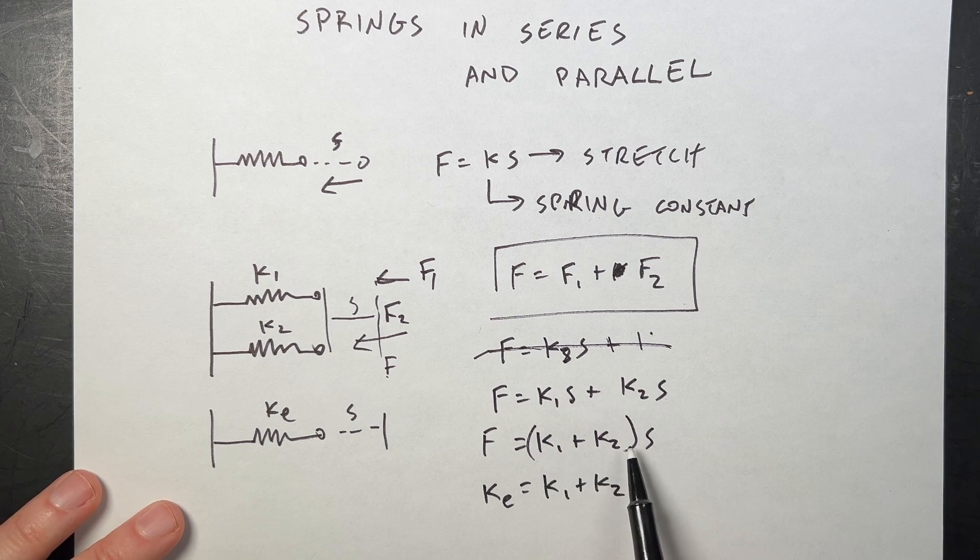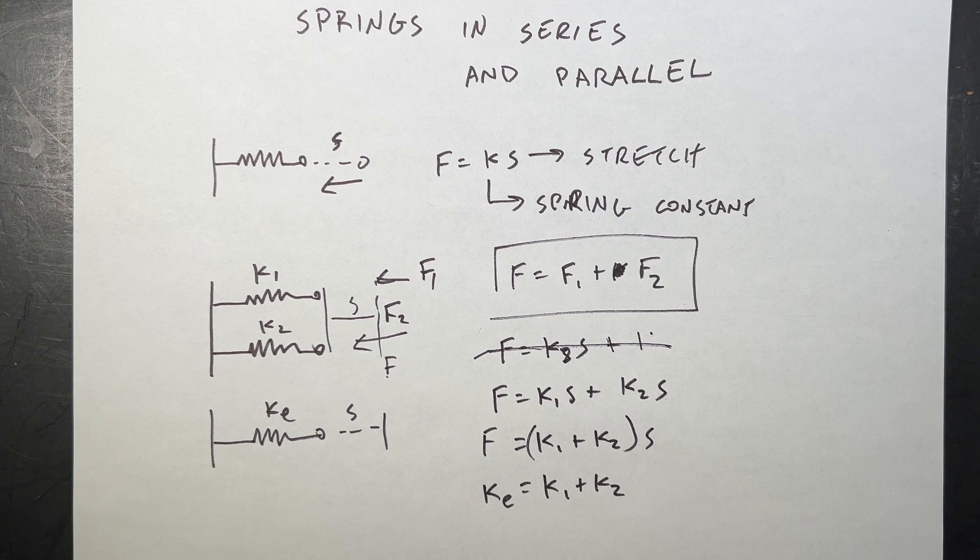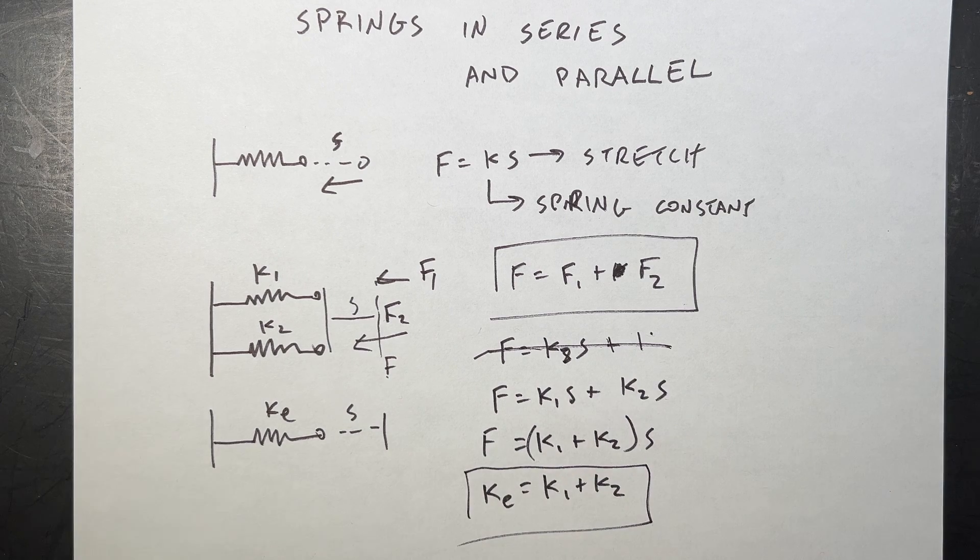And that's going to be my force. And there you can see that the equivalent spring constant would be K1 plus K2. Because then I'd get back into the form F equals KS. Yay. So that was pretty easy. Now let's consider what happens if I put them in series, series springs.